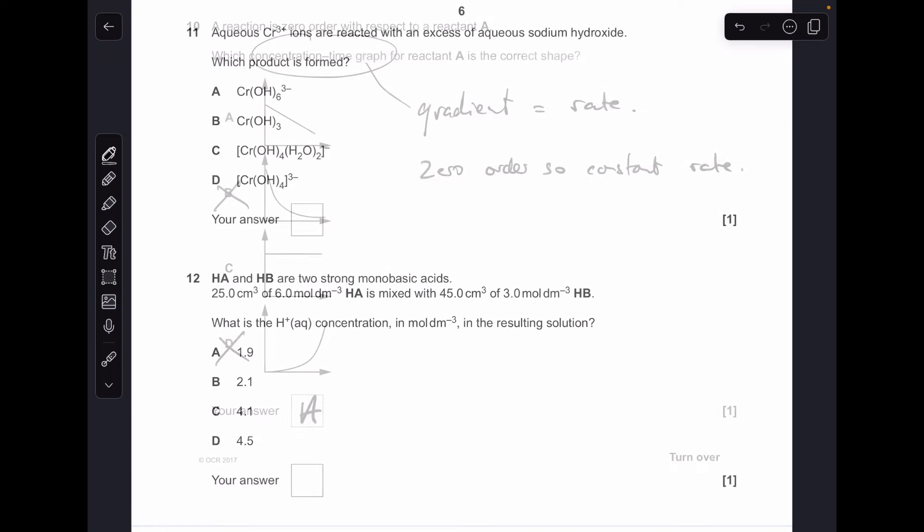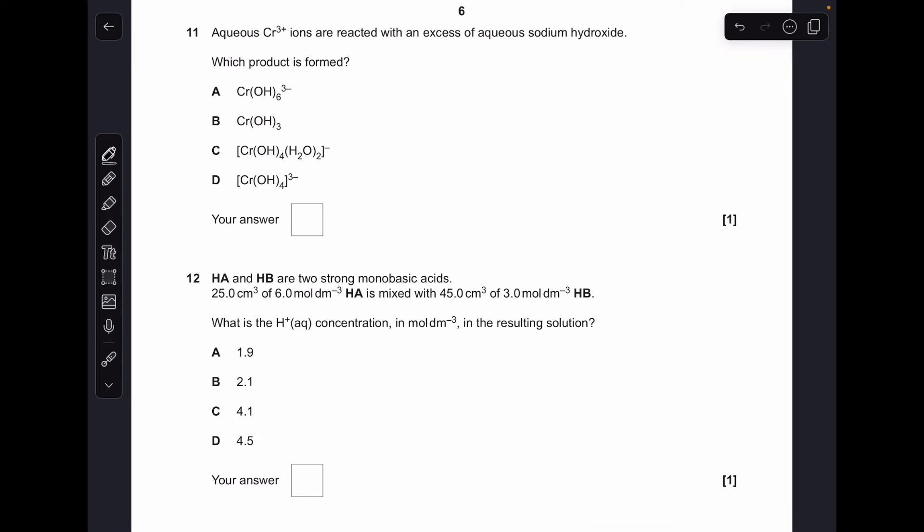Question 11, so all aqueous transition element ions react with aqueous sodium hydroxide to form precipitates. So aqueous Cr3+ ions will form Cr(OH)3 but this is the one that dissolves in excess and you get substance A.